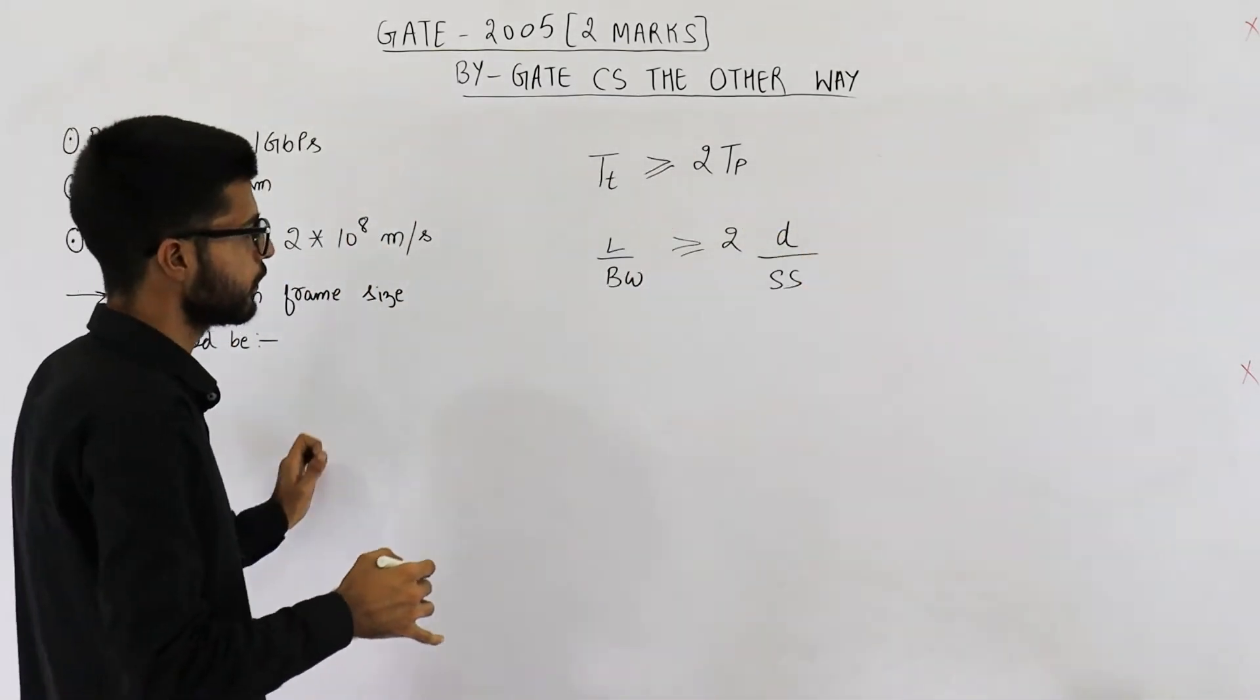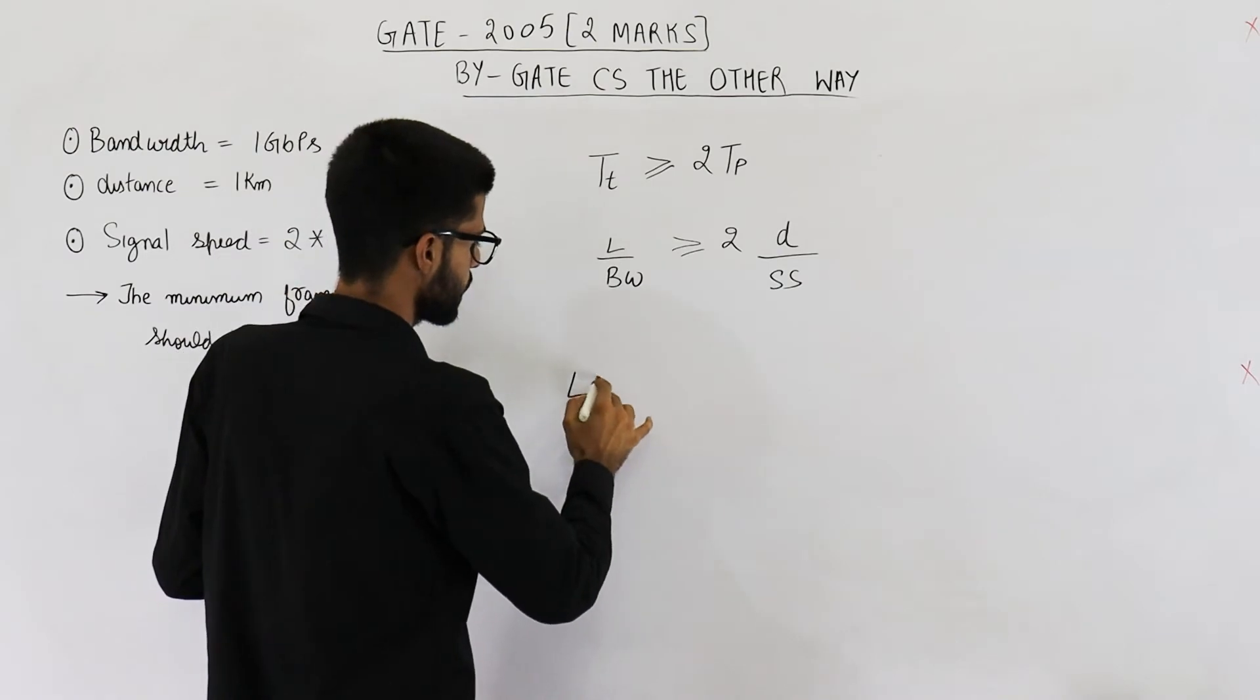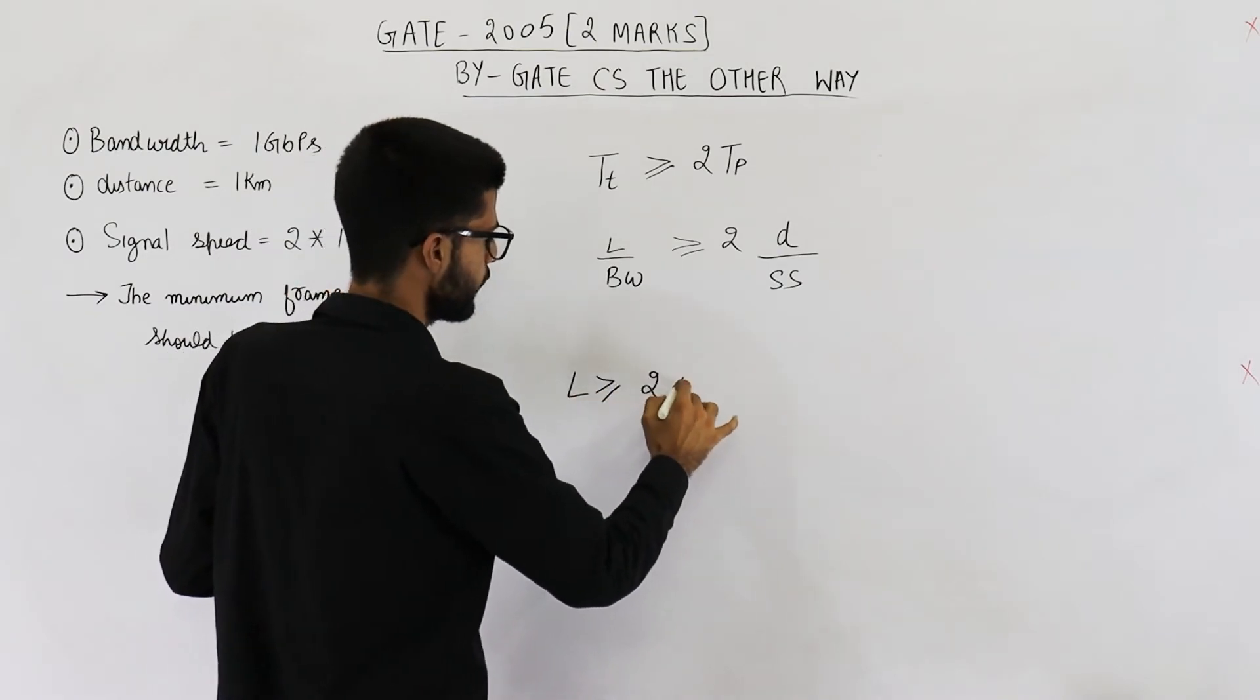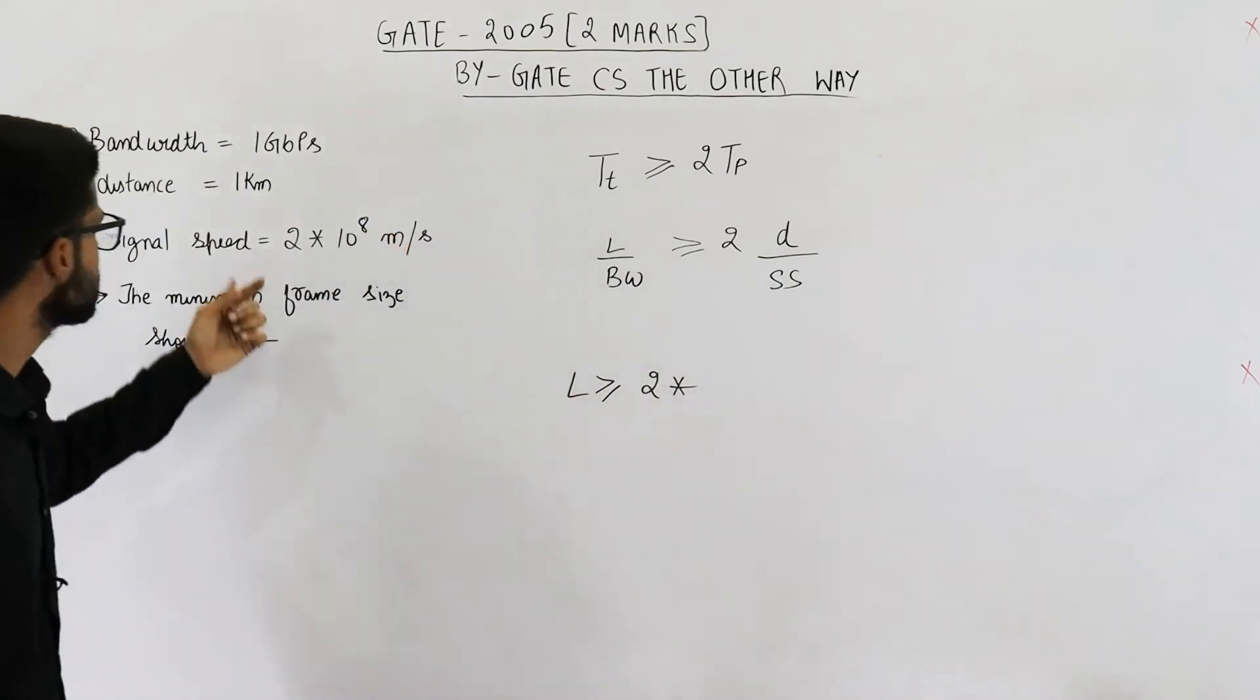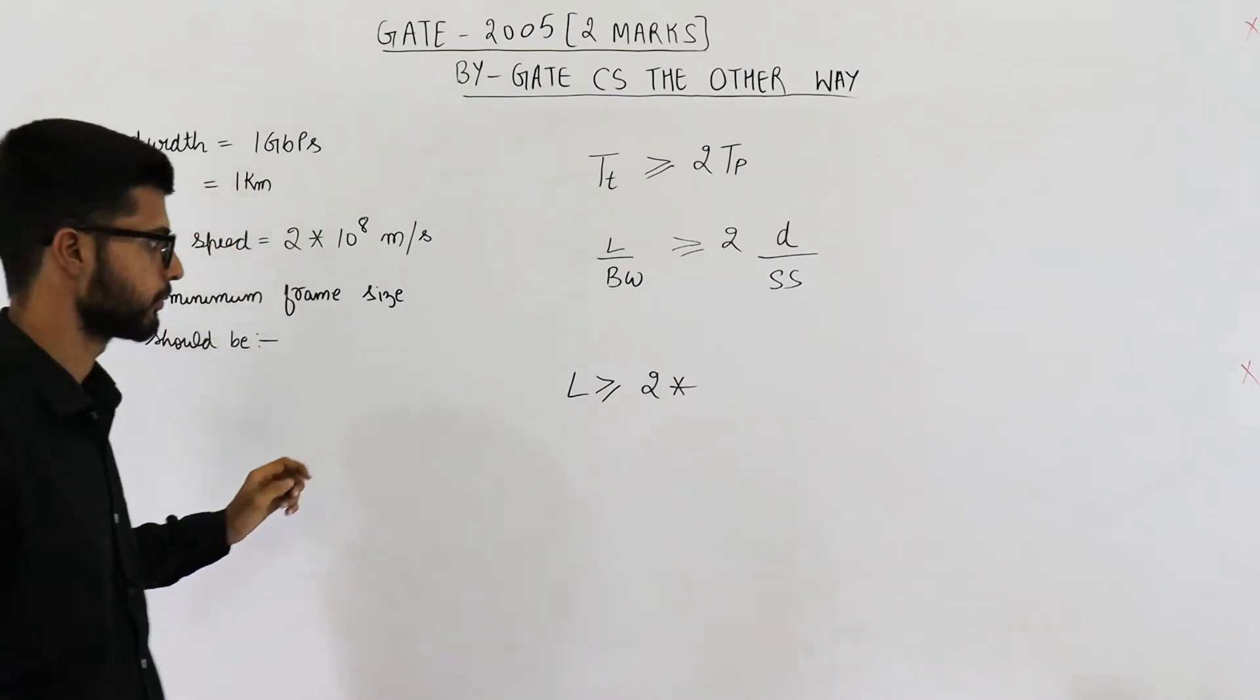Just substitute the values. You can see it will be L is greater than or equal to 2 into distance is given as 1 kilometer.